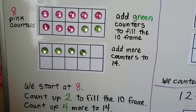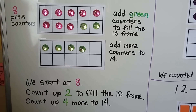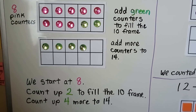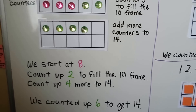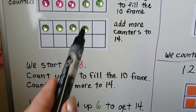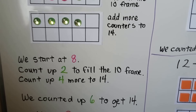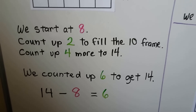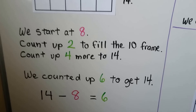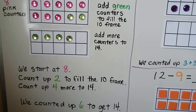We start at eight. We count up two to make a 10 and fill the 10 frame. We count up four more to 14. We counted up six. Two plus four is six — this two and this four is six to get to 14.